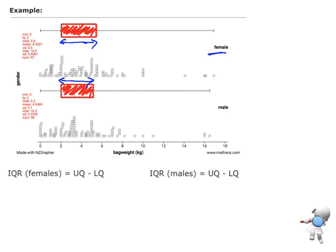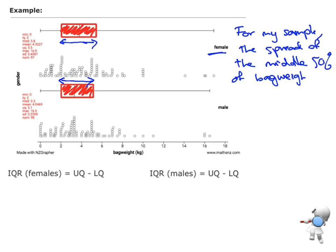The females might be a little bit more than the males. So that would be one of the first sentences that I would say is that, for my sample, the spread of the middle 50% of bag weights, it's always in context, for females, is slightly larger than the males. So that's all I need for my achieve.